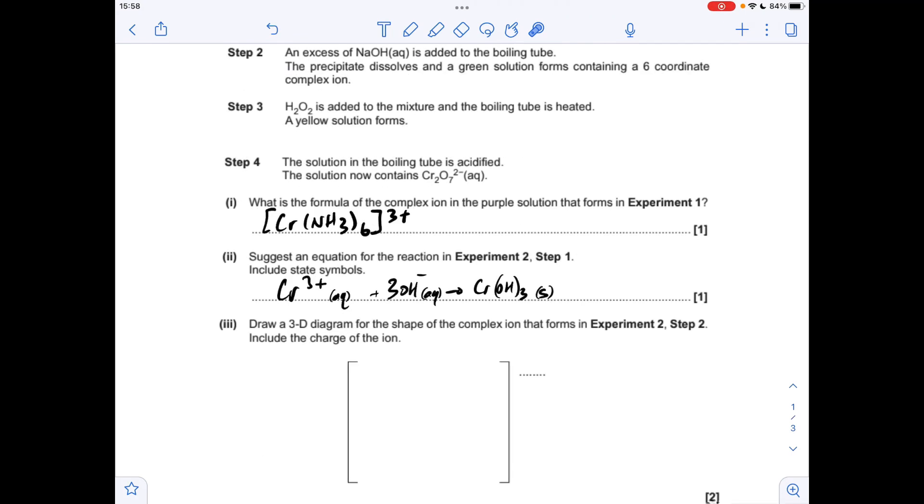Moving on to part 3, so the complex ion that forms in Experiment 2, Step 2, is the one that has chromium in the middle with 6 hydroxide ligands around the outside. Obviously it's got an octahedral shape. So just make sure your connectivity is right, and that it's the O that is bonded to the Cr in the middle. Charge wise, well we've got Cr3+ in the middle, we've got 6 OH- ligands around the outside, so overall it's got a 3 minus charge.